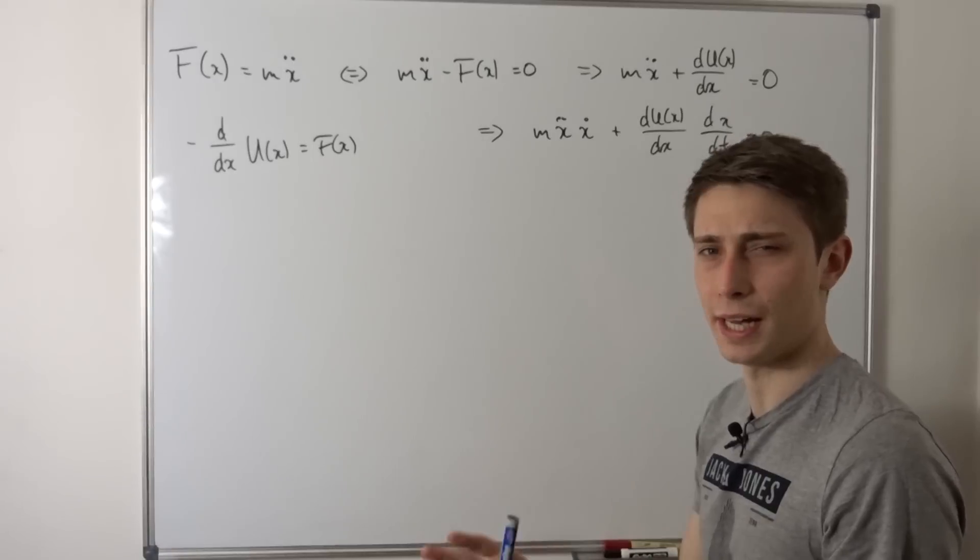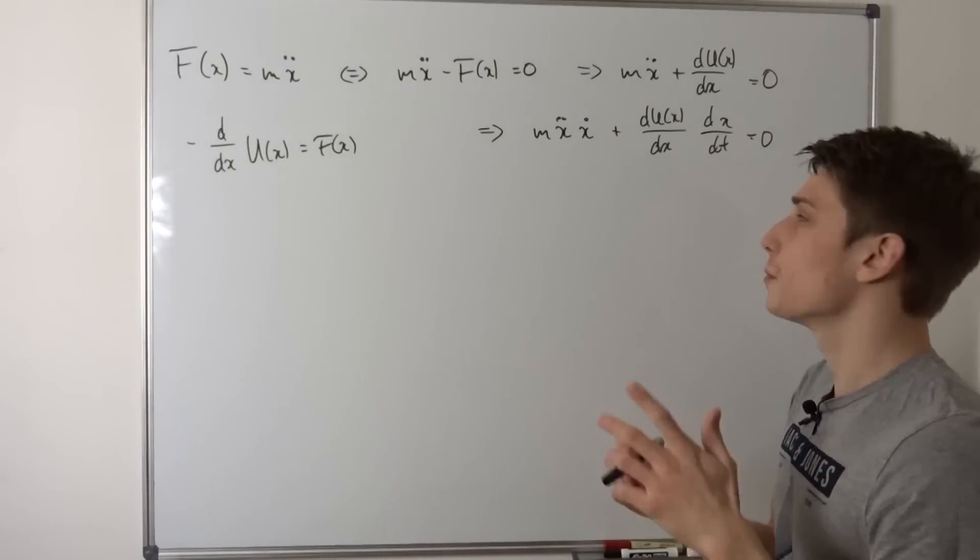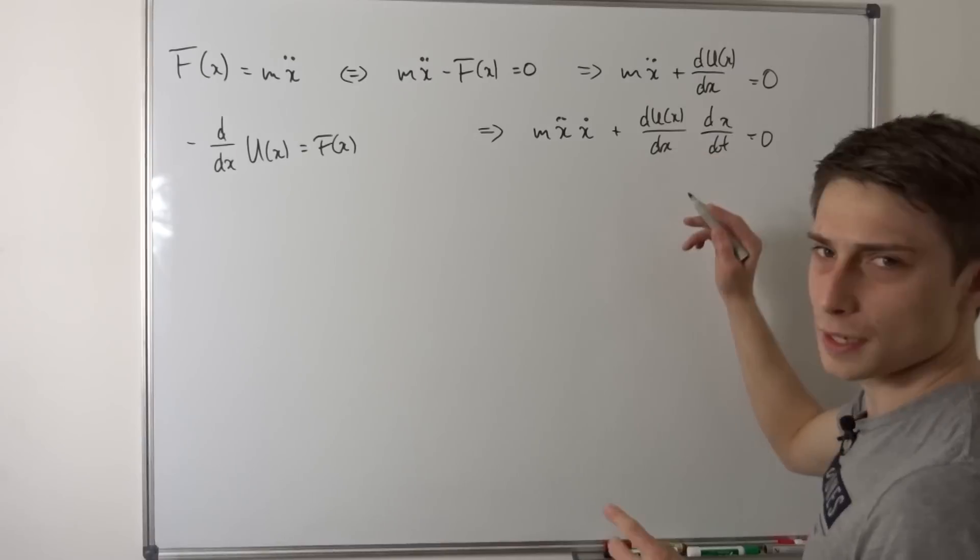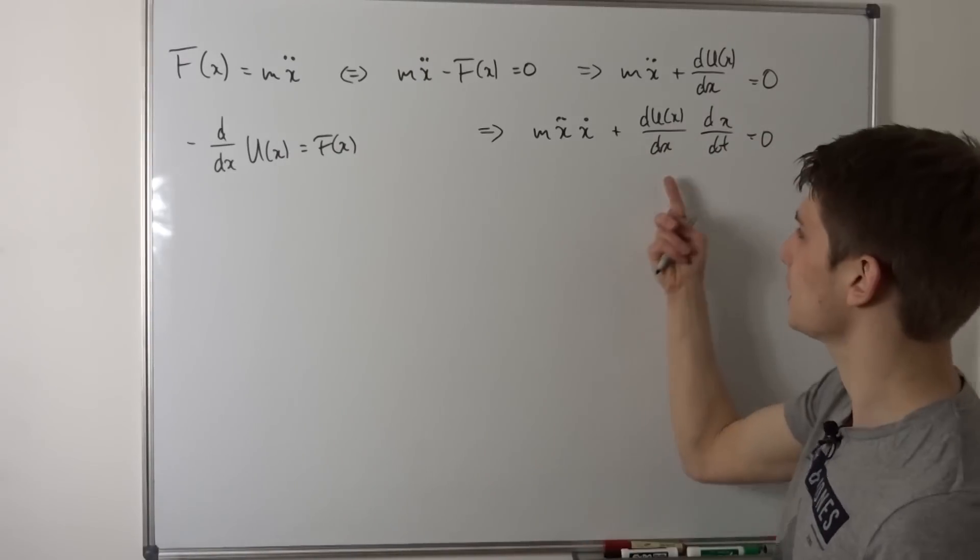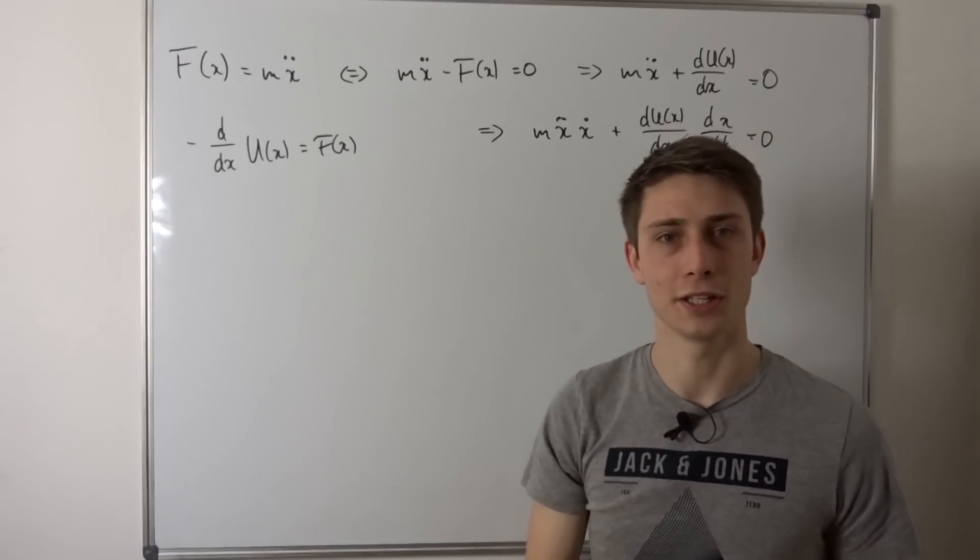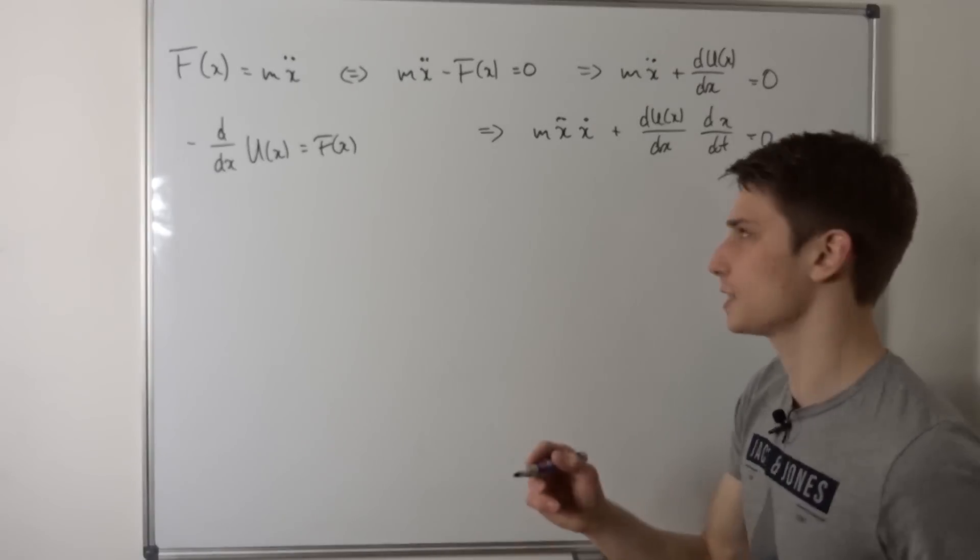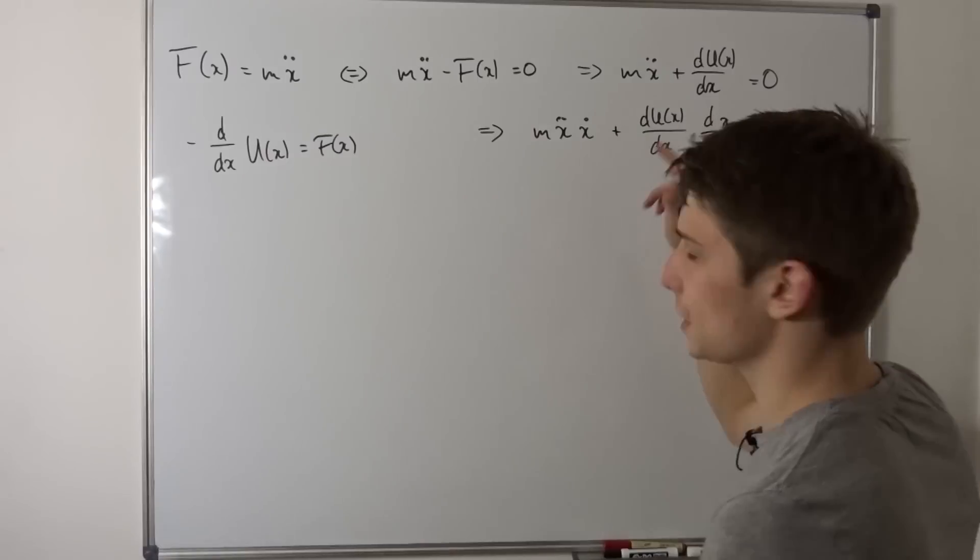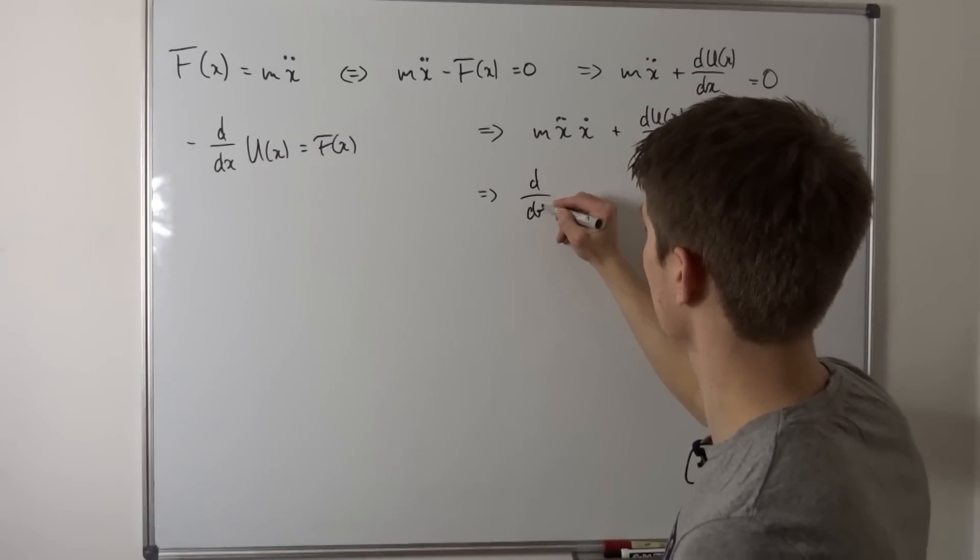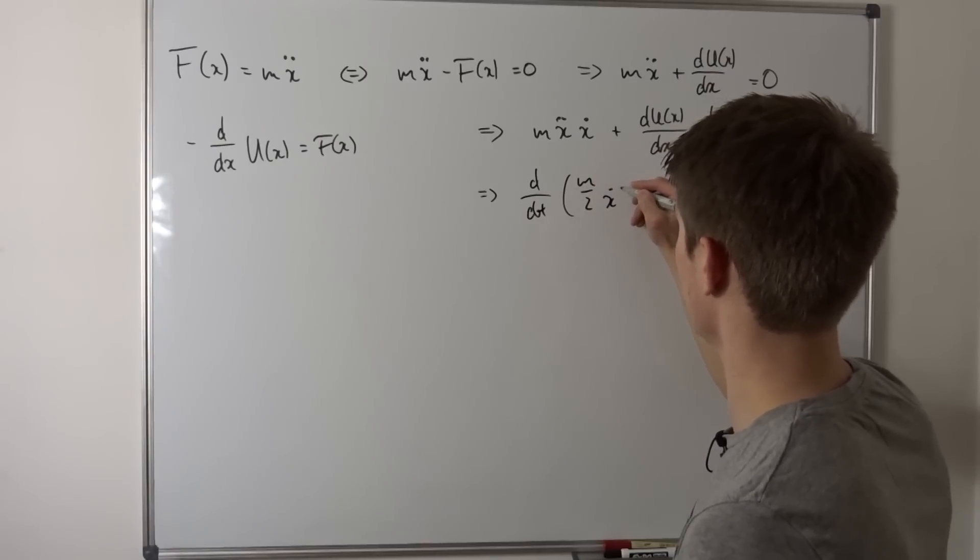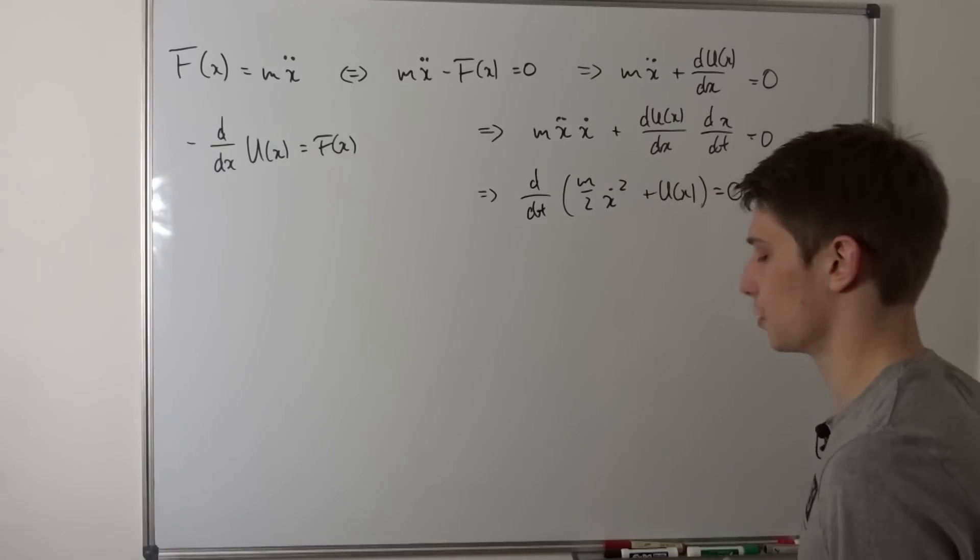So this right here is going to be our simple kinetic energy we've derived before. But this right here, what is that? That looks weird. You might notice something. If those were multiplicative, those dx's, those would just cancel out. And this right here actually is the chain rule in Leibniz's form. So this right here is nothing else than du dx dt. So that means we get d dt of m over 2 x dot squared plus u in terms of x and this is going to be zero.